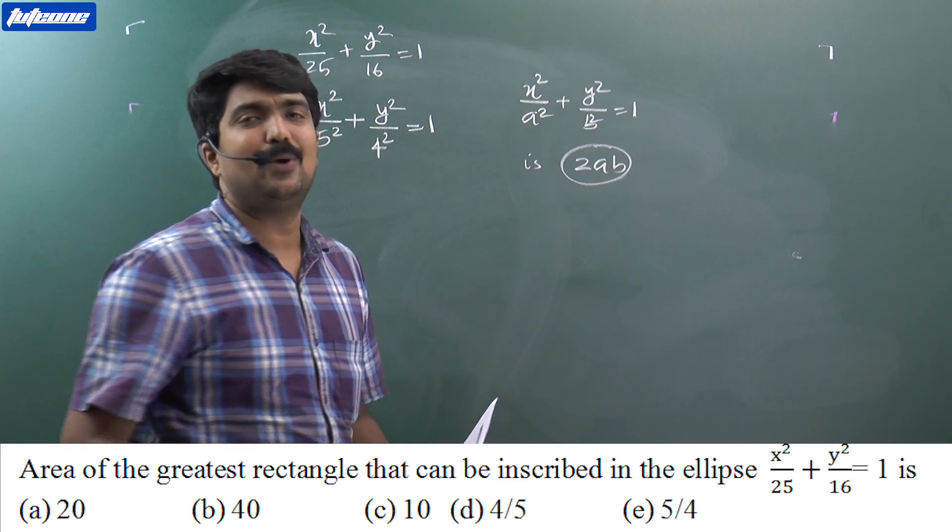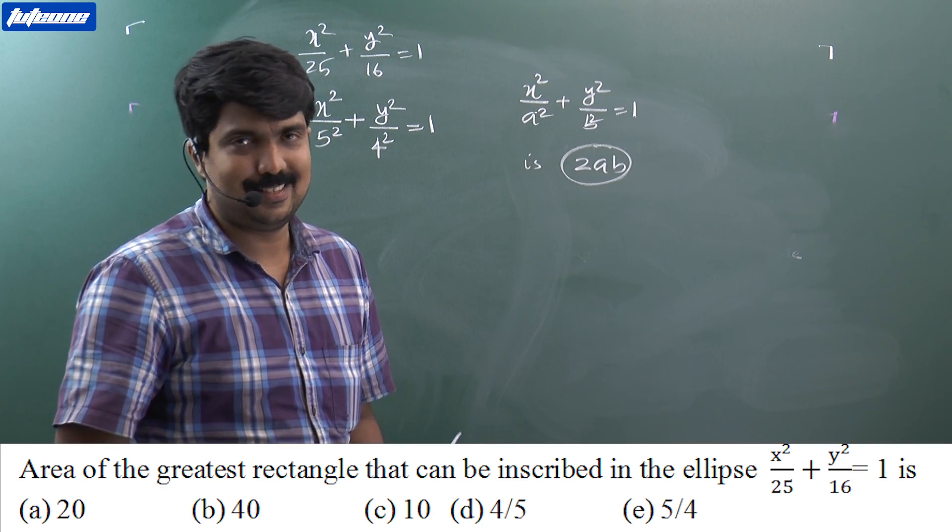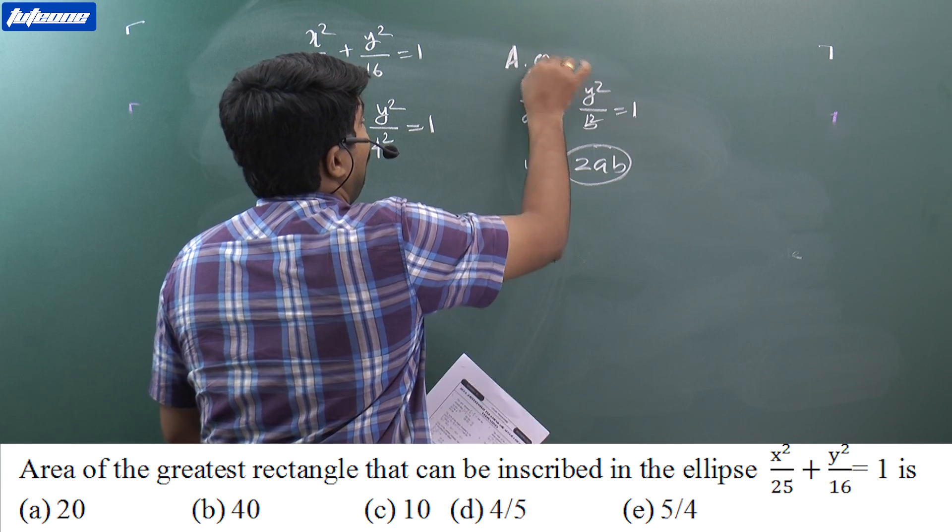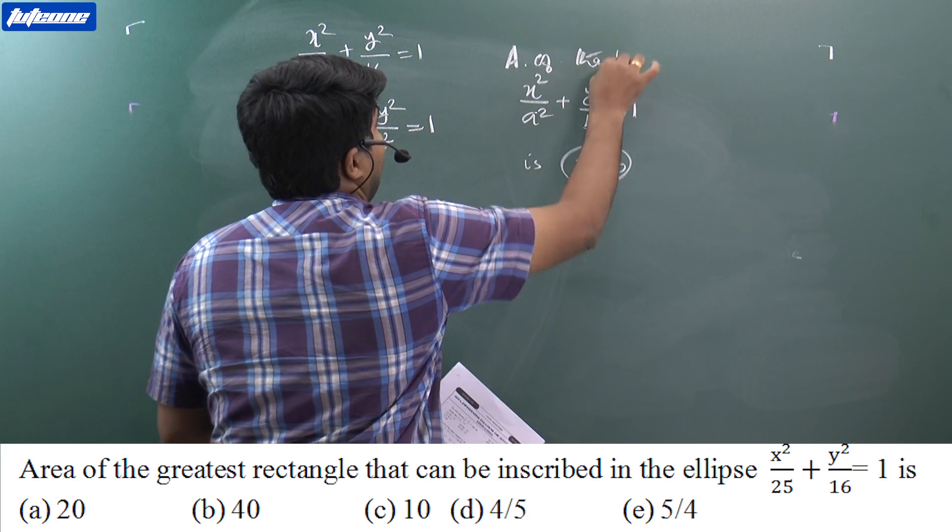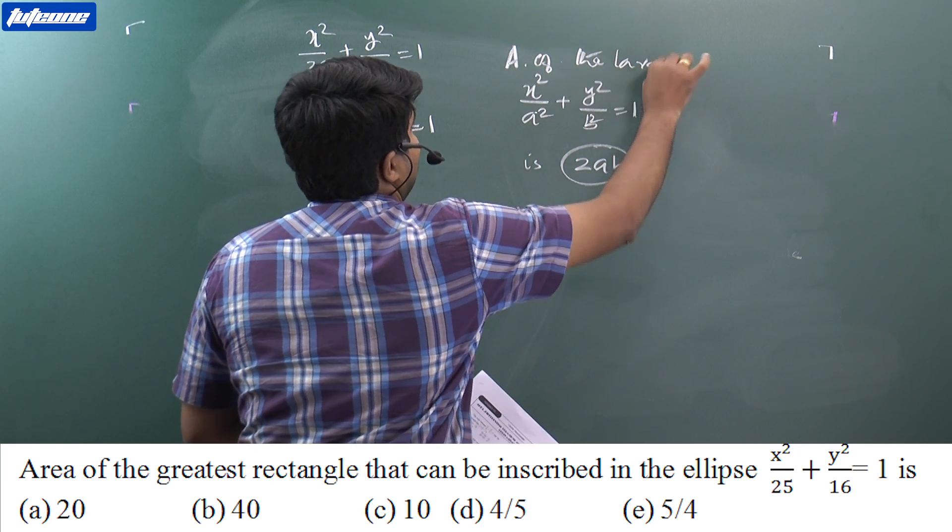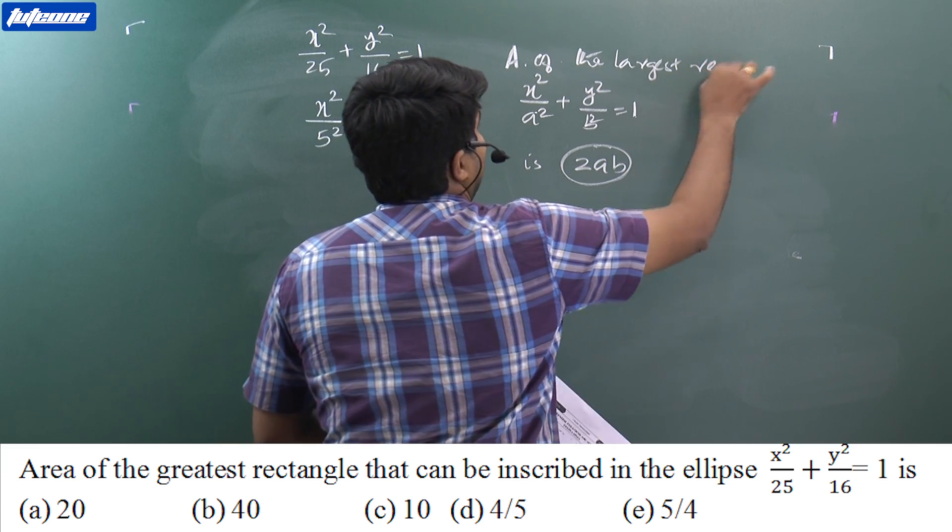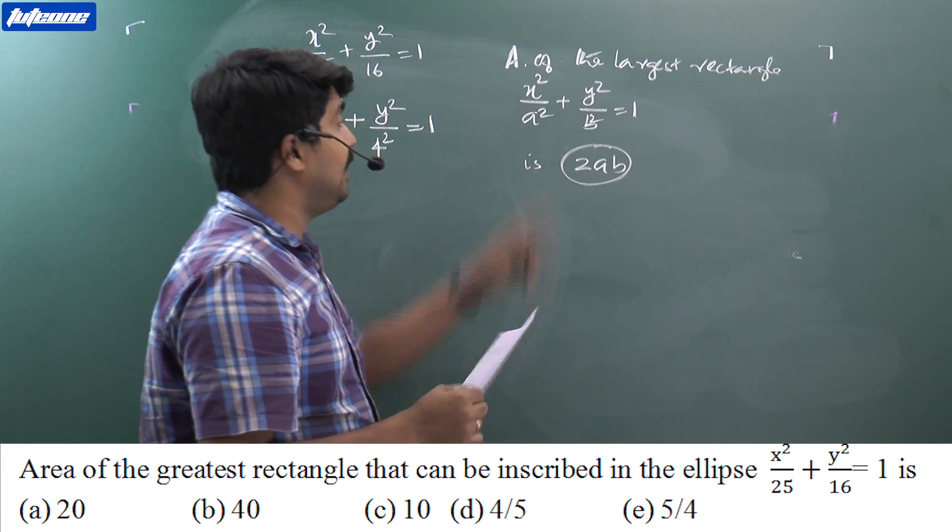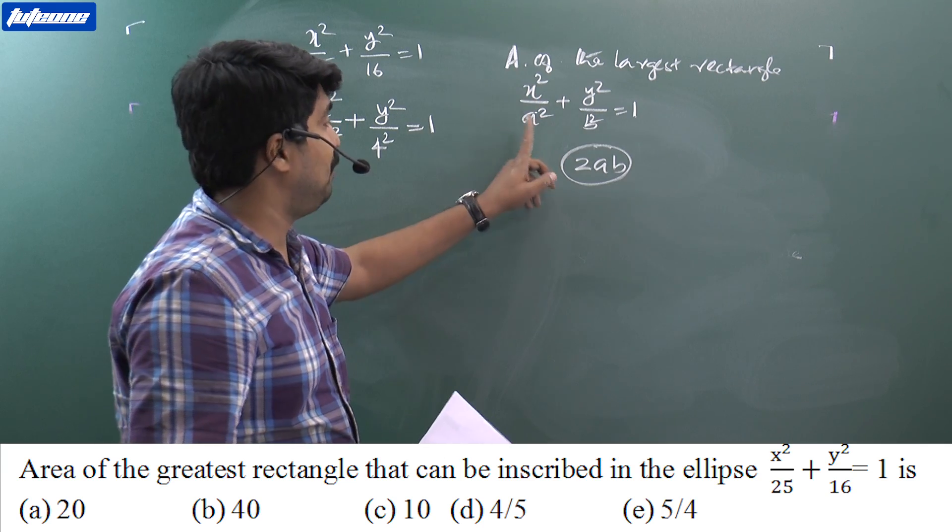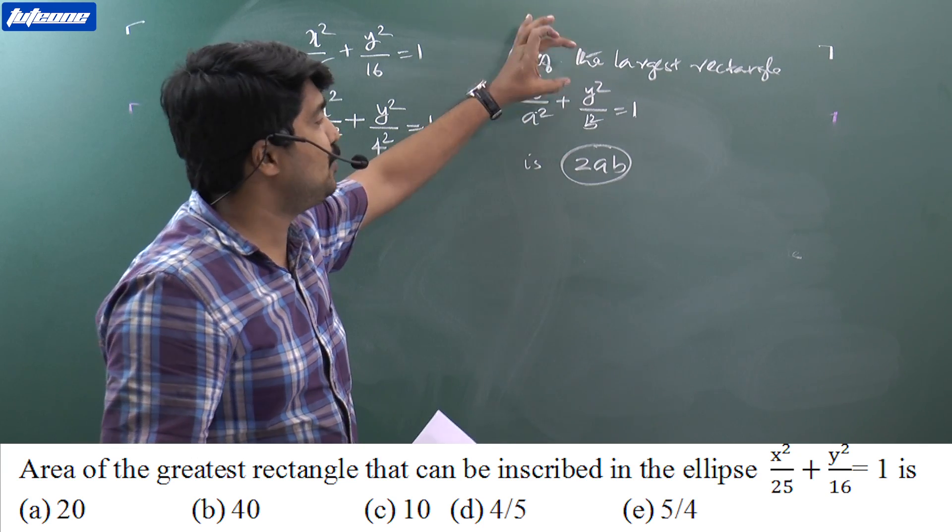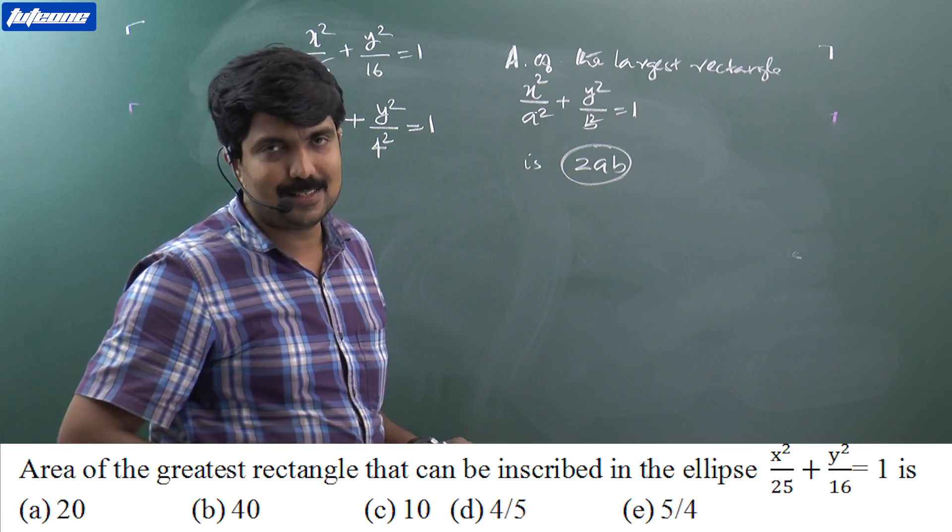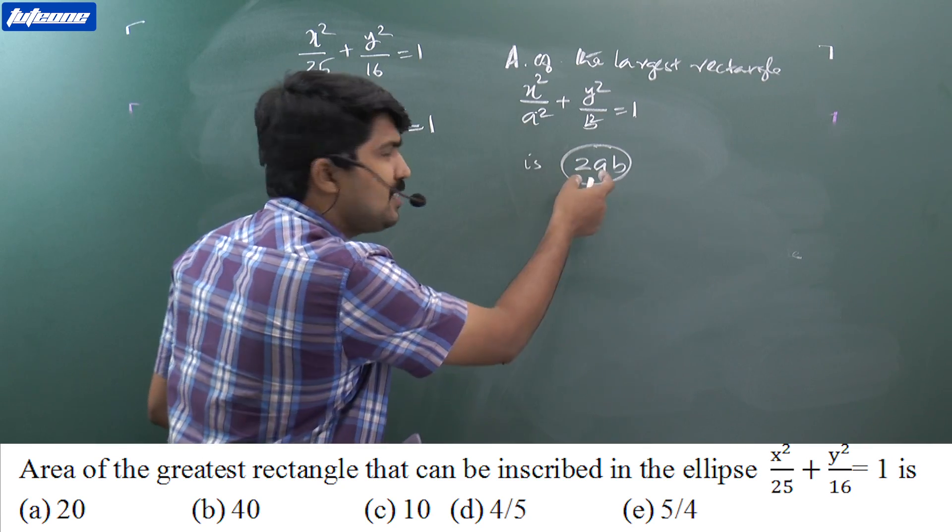This is an important point to remember always. The area of the largest rectangle inscribed in the ellipse x² / A² + y² / B² = 1 is 2AB square units. So, apply this result here.